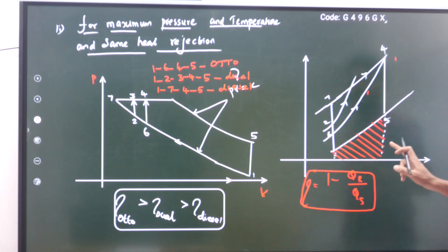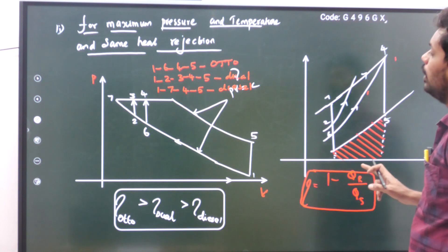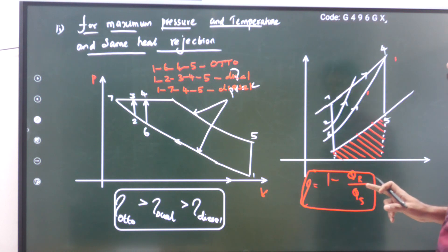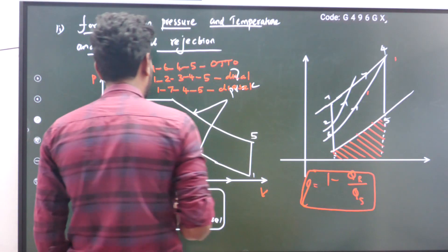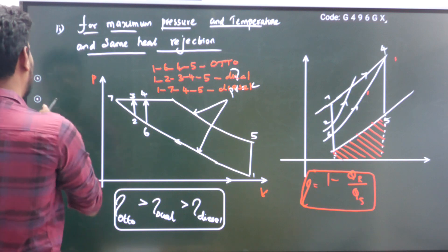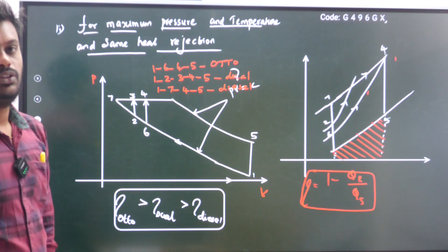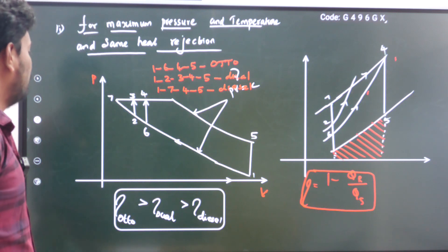Looking at the TS diagram, cycle 1-7-4-5 is the Diesel cycle, cycle 1-6-4-5 is the Otto cycle, and cycle 1-2-3-4-5 is the Dual cycle. Comparing heat supply areas, the Otto cycle has the highest efficiency, followed by the Dual cycle, then the Diesel cycle — the same comparison result as the previous class.